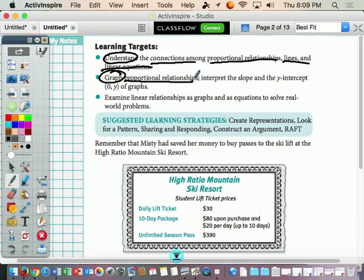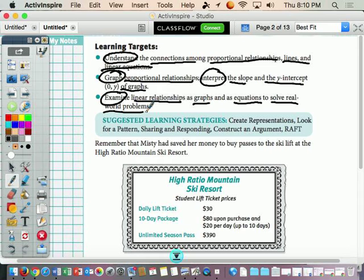We're going to graph proportional relationships, interpret the slope and the line intercept of graphs. Then we're going to examine linear relationships as graphs, as equations, and solve real-world problems. That is a lot of stuff, which just means that we're going to graph lines and understand how we graph lines. Don't get confused with all of the crazy language.